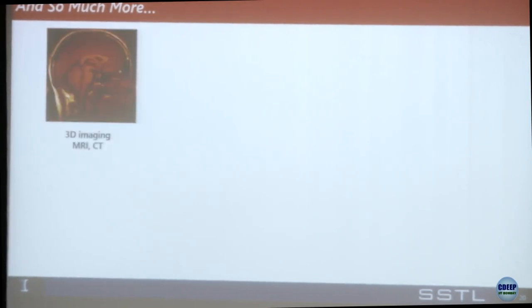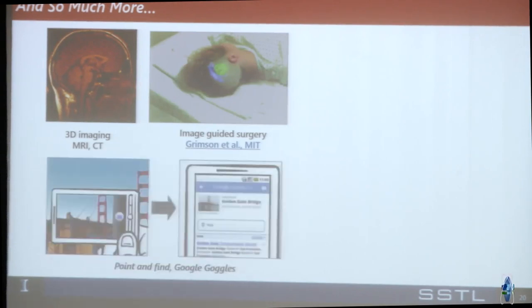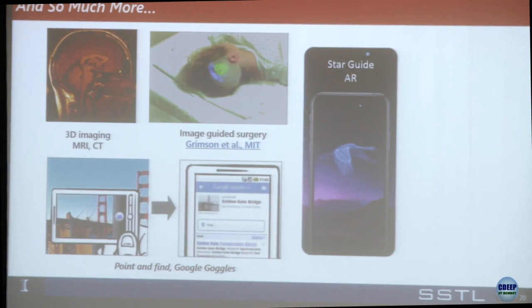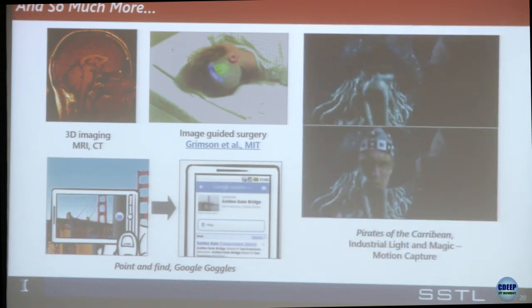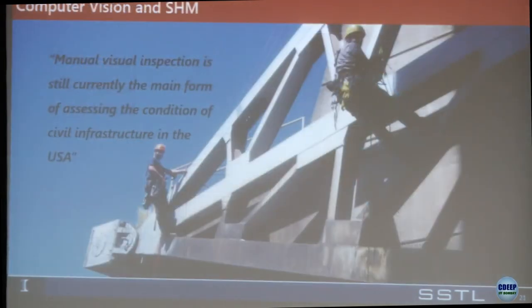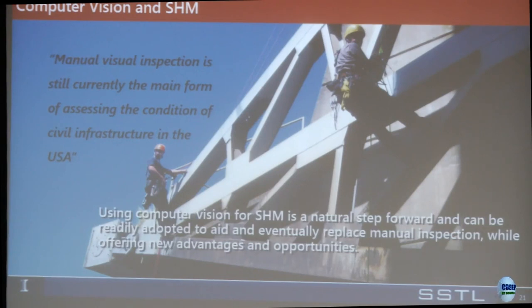There's also 3D imaging, MRI, CT, image-guided surgery, and augmented reality applications like StarGuide AR, which you can open on your phone and point at the sky to see star names. Computer animation for movies is also very popular. In civil engineering, though, our inspections are primarily manual — that's still the primary form for assessing the condition of civil infrastructure in the United States and probably throughout the world. Using computer vision for structural health monitoring is a natural step beyond the current status.